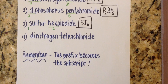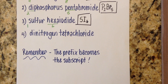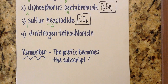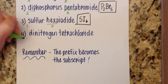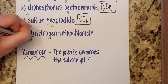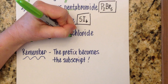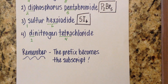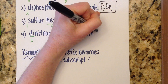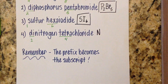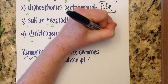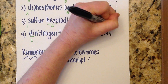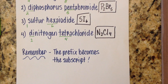Number four: dinitrogen tetrachloride. They're literally telling you — two nitrogens, four chlorines. It's like someone sitting beside you giving you all the answers. So that's N2Cl4. The prefix becomes the subscript.